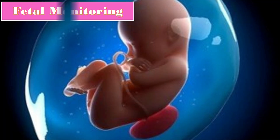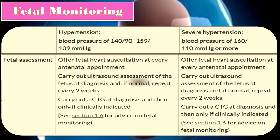This chart from the NICE guideline outlines fetal monitoring for hypertension in pregnancy. When blood pressure is between 140/90 and 159/109, offer fetal auscultation at every antenatal appointment, carry out ultrasound on a two-weekly basis, and perform CTG at diagnosis then only if clinically indicated. The same points apply to severe hypertension when blood pressure is 160/110 or more.